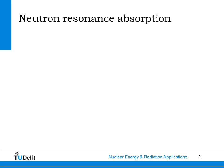Now imagine a neutron colliding with a uranium-238 nucleus. If the energy of the neutron is 6.7 eV, which equals just the energy of the first resonance of uranium-238, it can easily be absorbed by the uranium, indicated here with the red arrow.